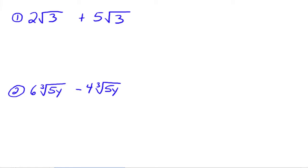This first example has us doing 2 times the square root of 3 plus 5 times the square root of 3. This is very similar to something like 2x plus 5x — everybody knows those are like terms, and we can add them up to get 7x, because the variable parts are exactly the same and you just add the coefficients.